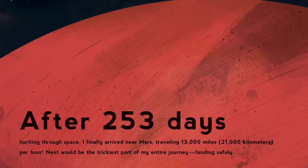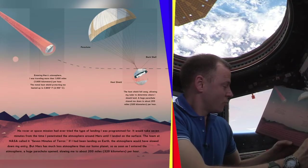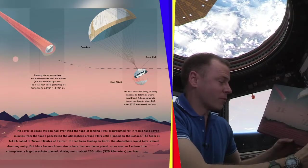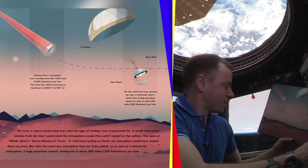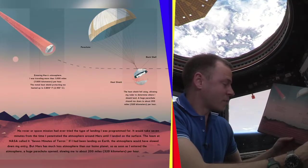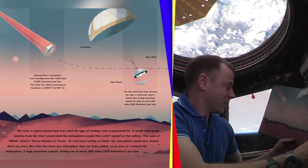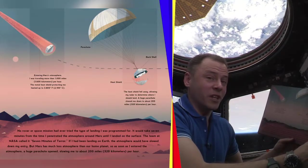After 253 days hurtling through space, I finally arrived near Mars, traveling 13,000 miles per hour. Next would be the trickiest part of my entire journey, landing safely. No rover or space mission had ever tried the type of landing I was programmed for. It would take seven minutes from the time I penetrated the atmosphere around Mars until I landed on the surface. The team at NASA called it seven minutes of terror.